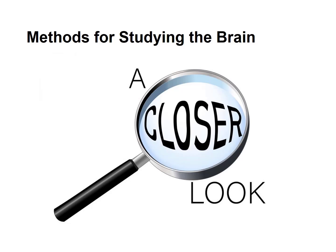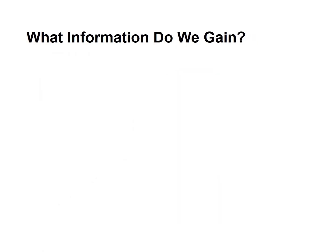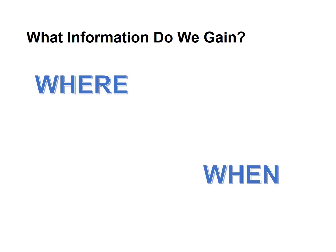Let's take a look at some methods that are used for studying the brain. For each of the methods we'll look at, we'll be interested in two kinds of information. First, we'll be interested in whether the method can tell us where in the brain a particular process is occurring. Second, and perhaps more importantly, we'll want to know when that particular area of the brain begins to participate in that activity or process.